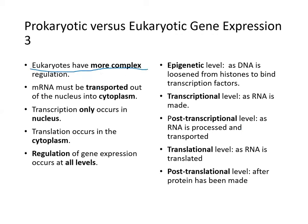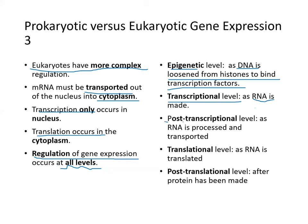Eukaryotes have much more complex gene regulation. RNA must be transported out of the nucleus into the cytoplasm. Transcription occurs only in the nucleus; translation occurs in the cytoplasm. But regulation of gene expression occurs at all levels: epigenetic level (as DNA is loosened from histones to bind transcription factors), transcriptional level (as RNA is made), post-transcriptional level (as RNA is processed and transported), translational level (as RNA gets translated), and post-translational level (after proteins have been made).